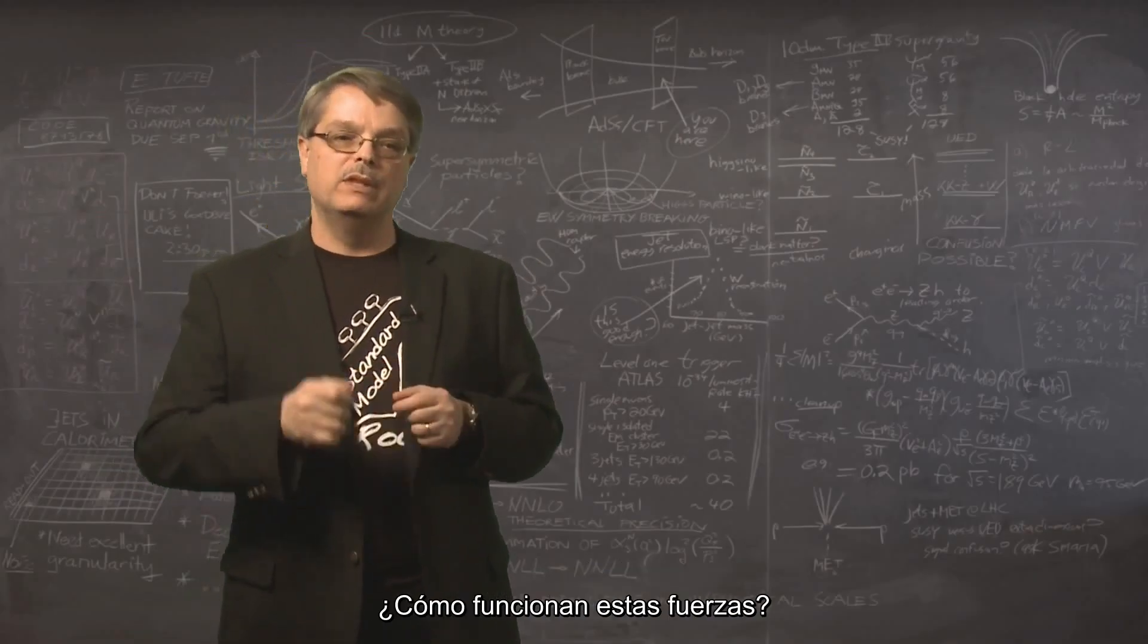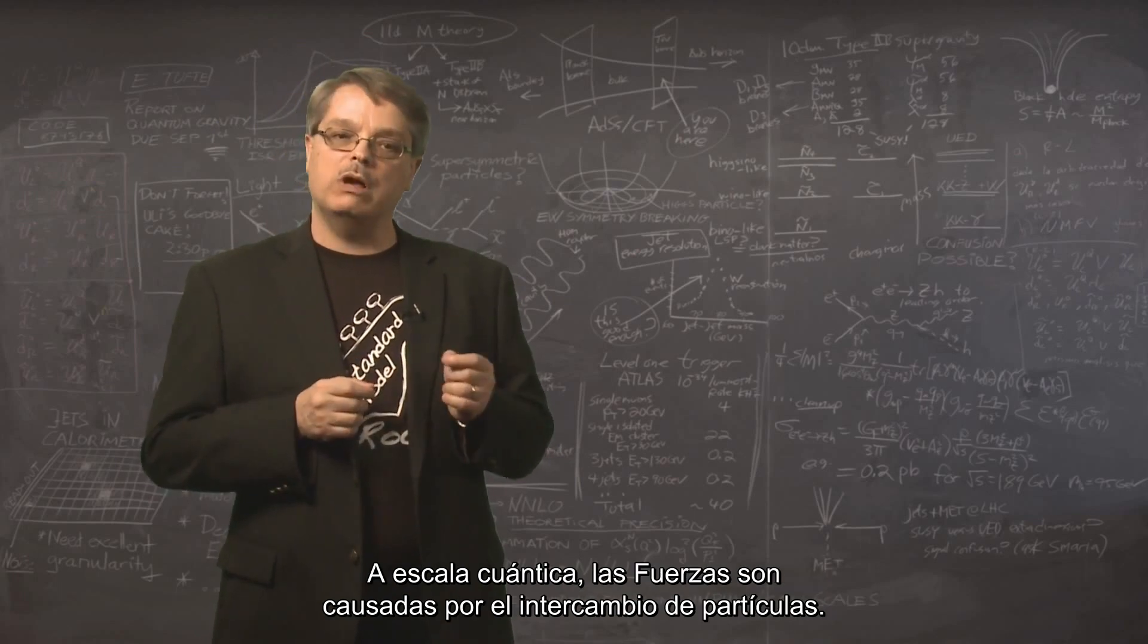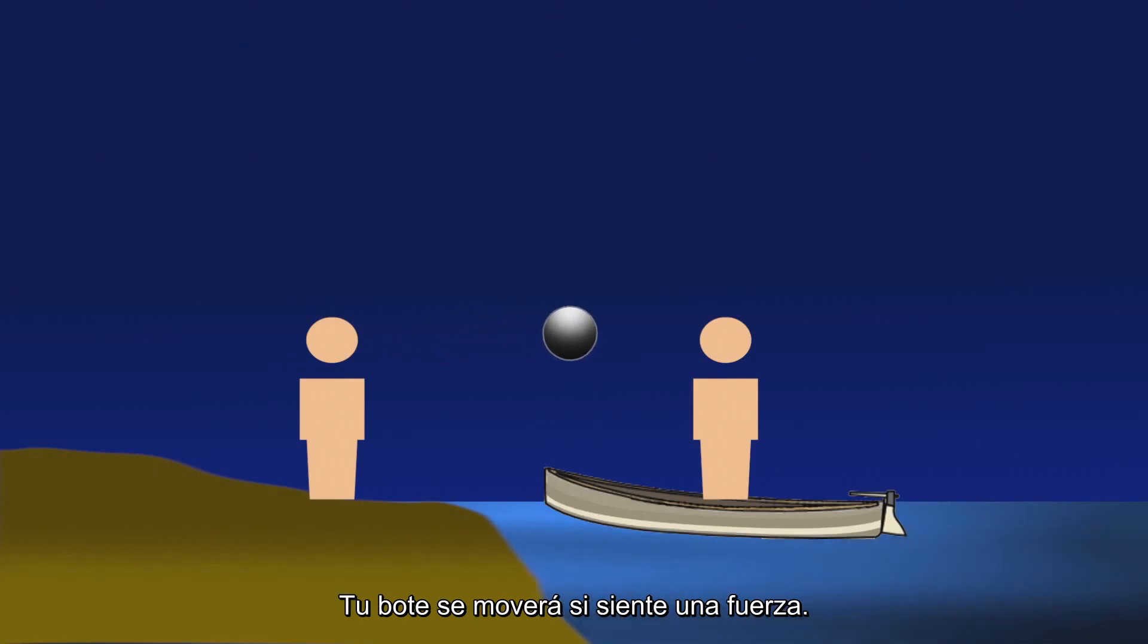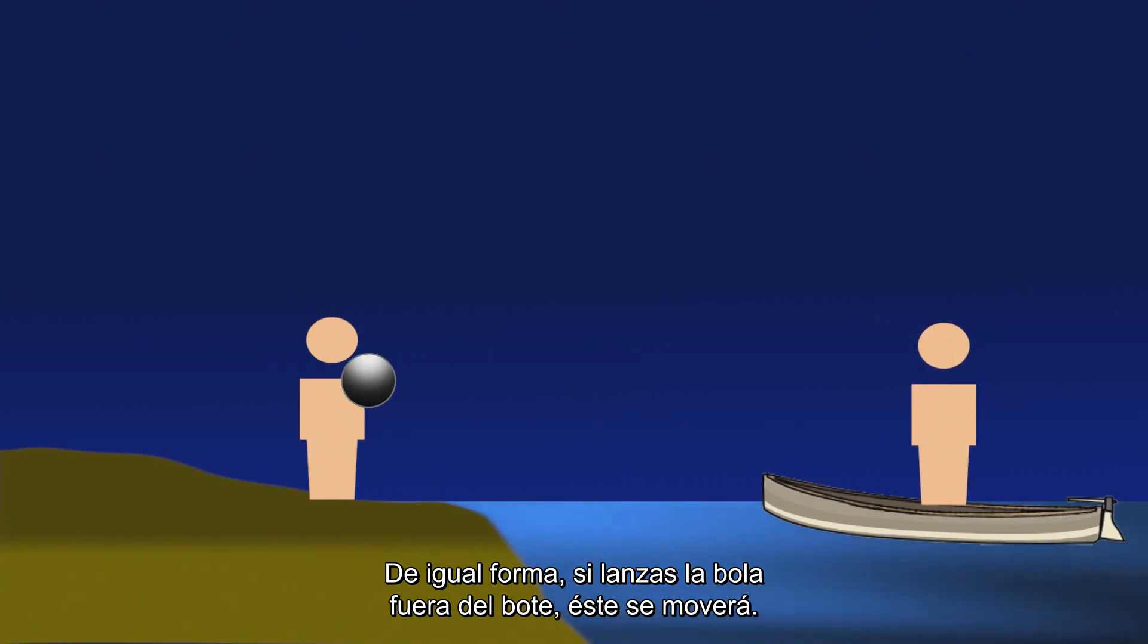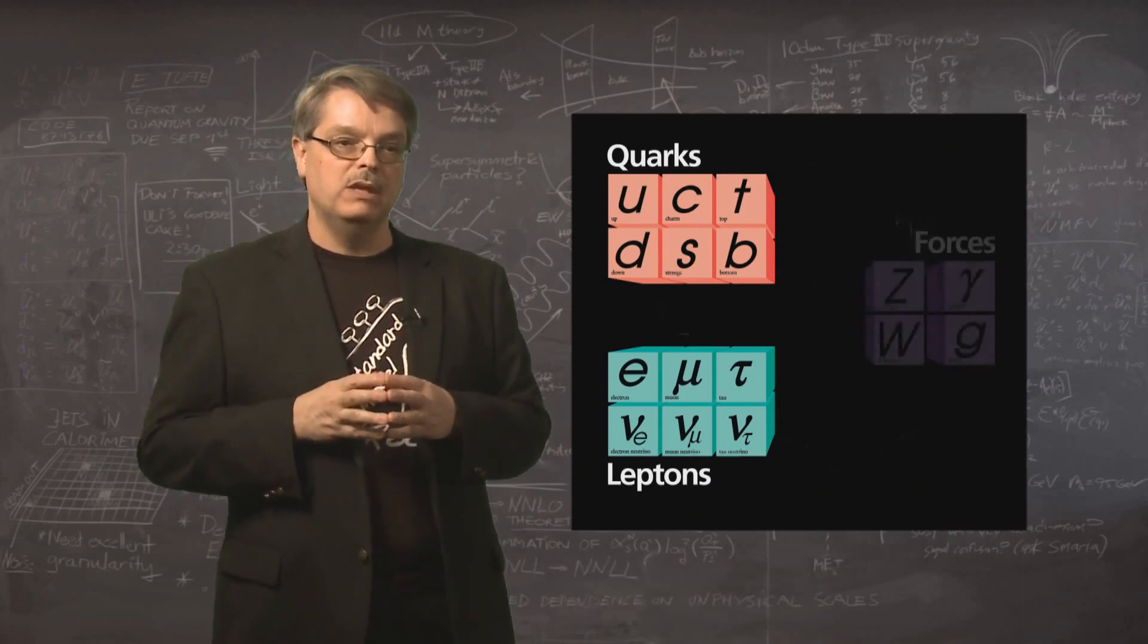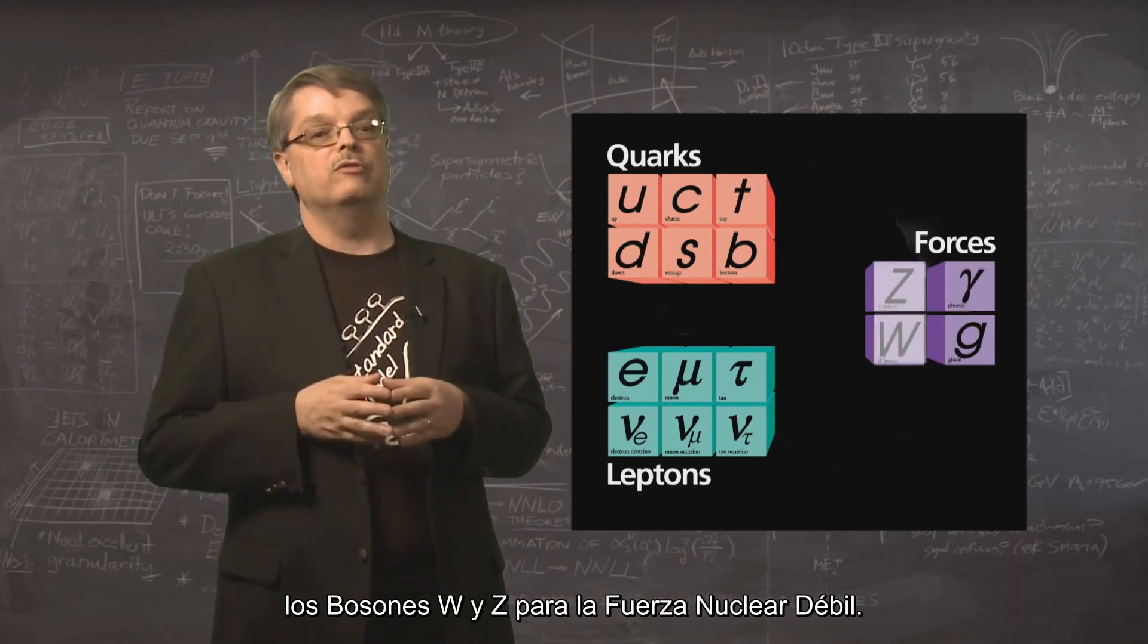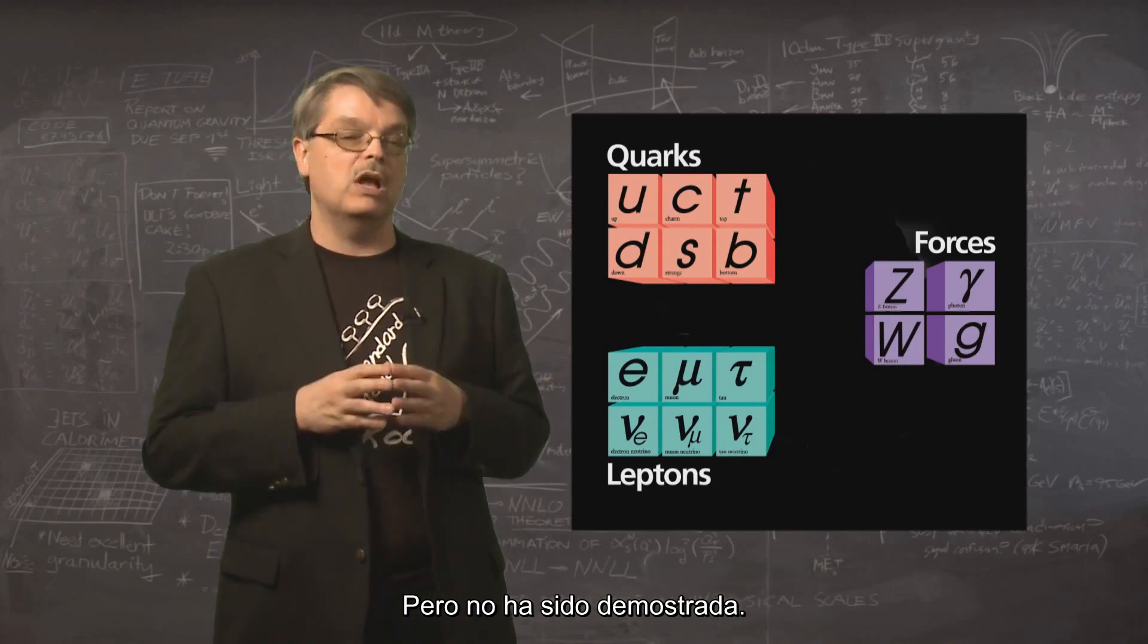How do these forces work? In the realm of the super small, we need to have a different way of thinking about forces. At the quantum scale, forces are caused by exchanging particles. To understand how this works, imagine standing in a boat and having someone throw you a heavy sack. Your boat would move as if it felt a force. Similarly, if you throw a heavy sack off the boat, the boat would move. All the subatomic forces work by exchanging a different kind of particle. The particles are the gluon for the strong nuclear force, the photon for the electromagnetic force, and the W and Z bosons for the weak nuclear force. Physicists speculate about a particle called the graviton for gravity, but this has not been demonstrated.